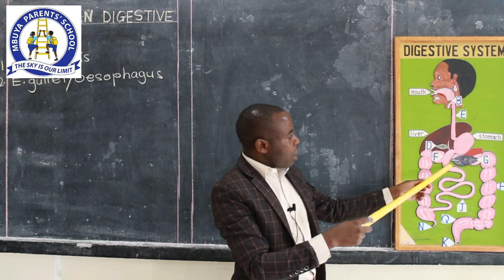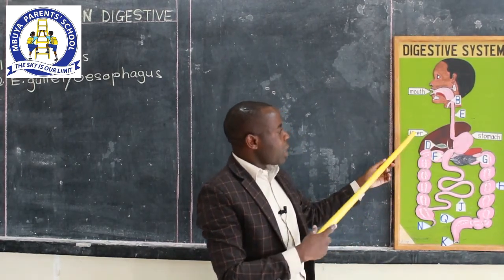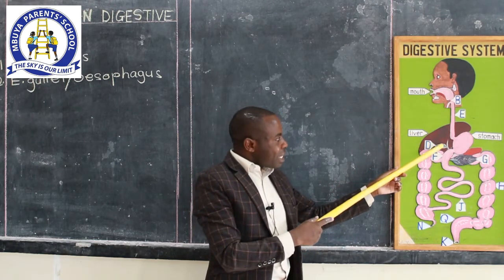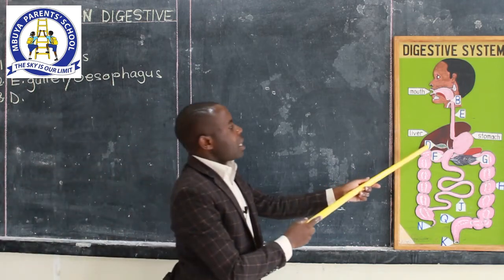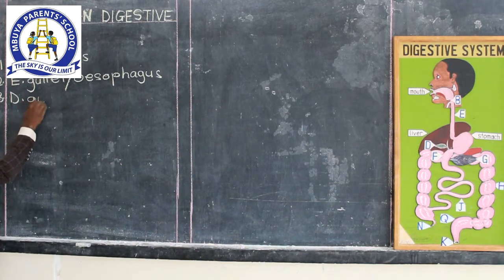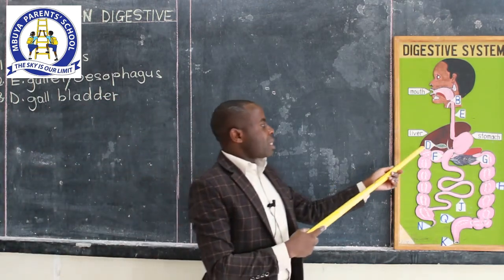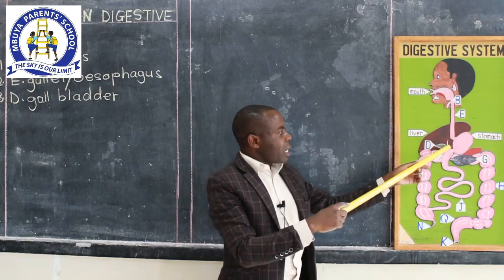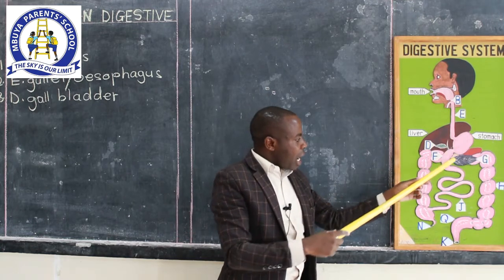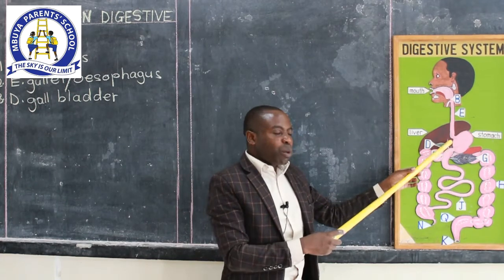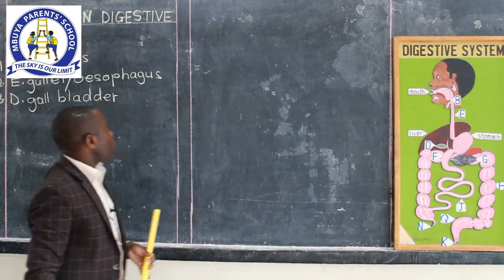From the stomach, we have got the liver. The liver has got another part inside, which is part D — the gallbladder. The gallbladder stores the bile, which is produced by the liver, and that bile comes into part F — the small intestines, which go from here up to here. The small intestines have two parts: the first part is part F, which is the duodenum.